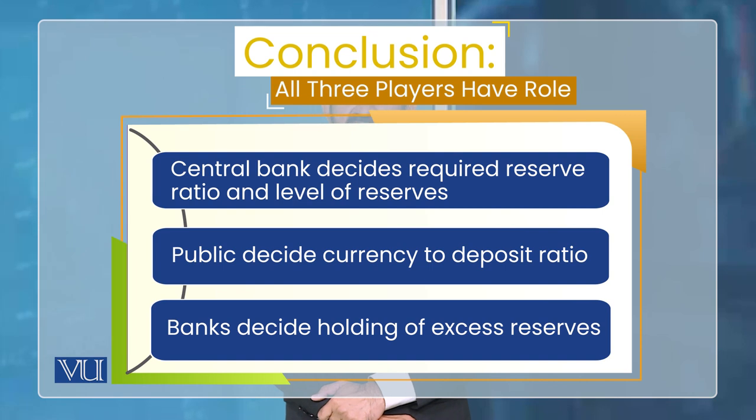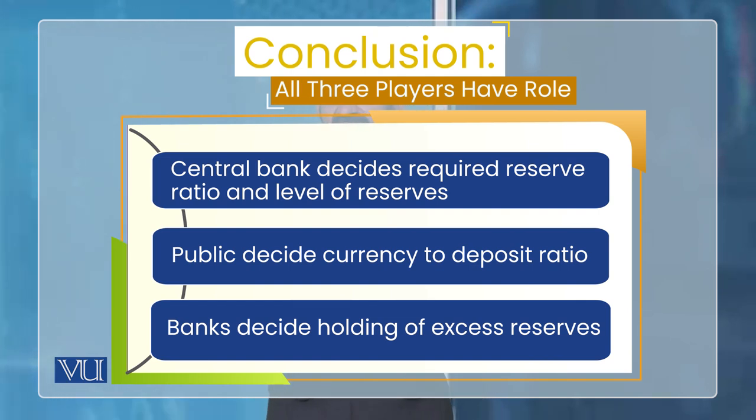If currency is withdrawn, deposit creation decreases — whose decision is that? It is the public's decision. We saw that Bank B held excess reserves and didn't lend, so the entire process stopped and multiple deposit creation did not happen — whose decision was that? It was Commercial Bank B's decision; neither the central bank nor the public had a role. The 1 billion reserve created through OMO — whose decision was that? The central bank's. The required reserve ratio set at 10% — set by the central bank. This means the final total money created includes the central bank's decision, the commercial banks' decision, and the general public's decision.